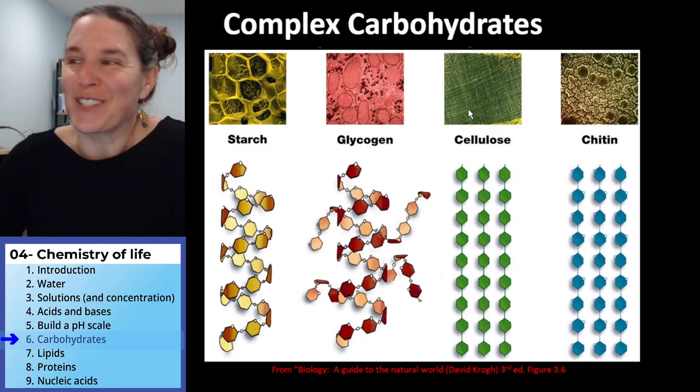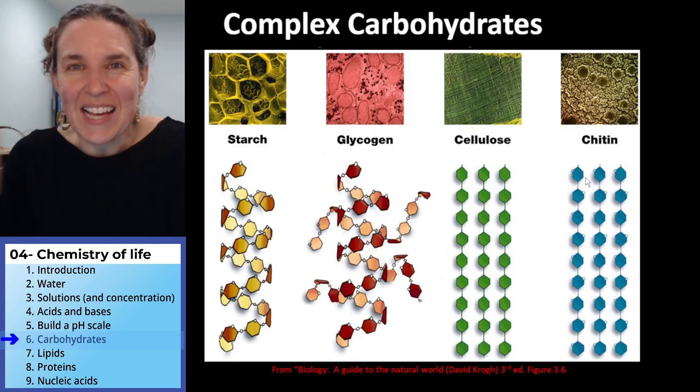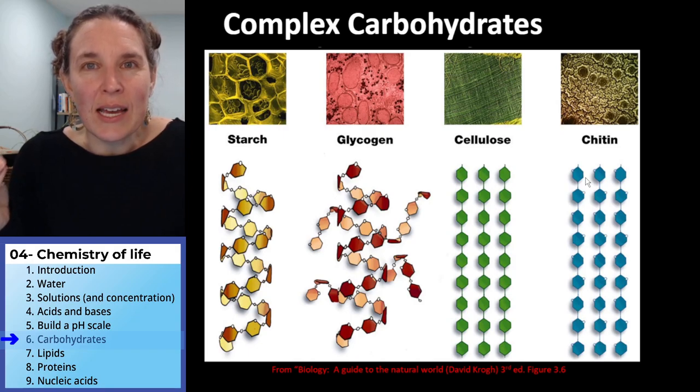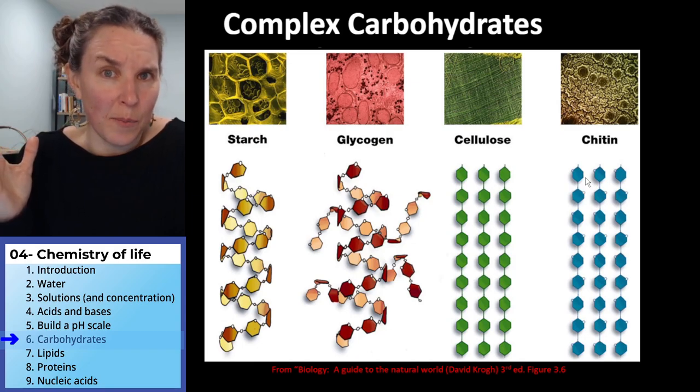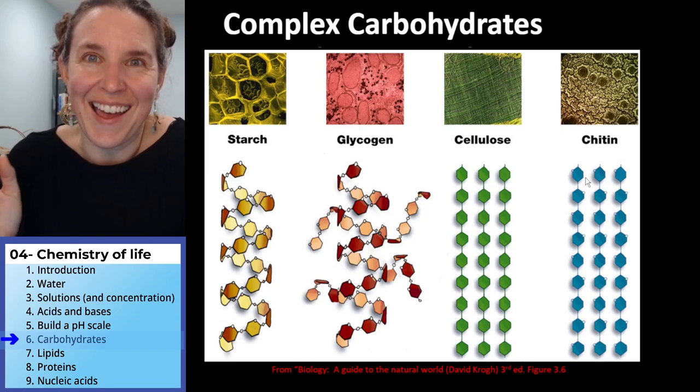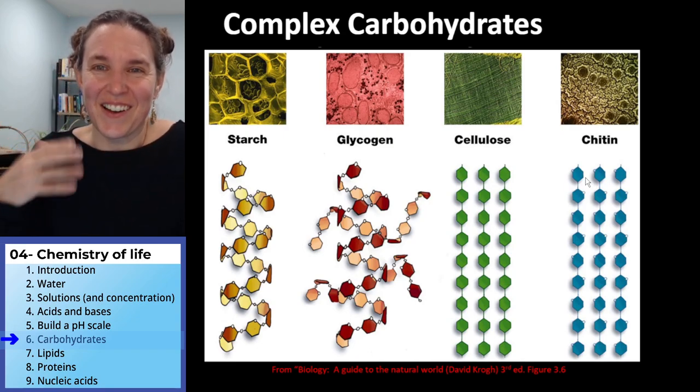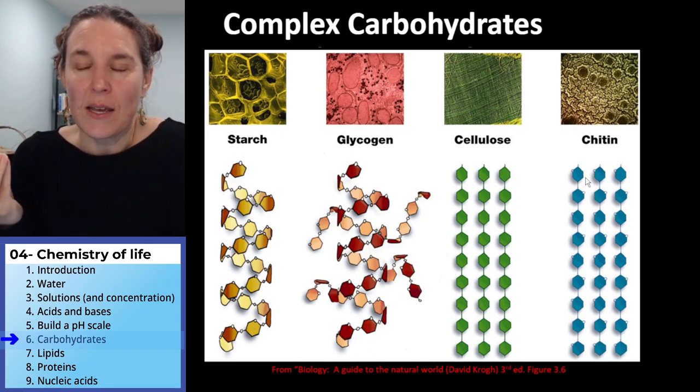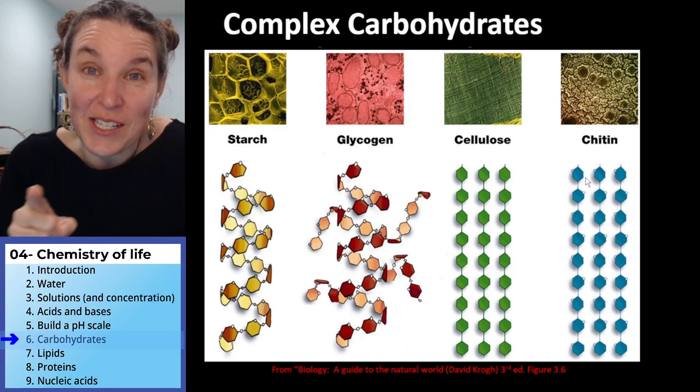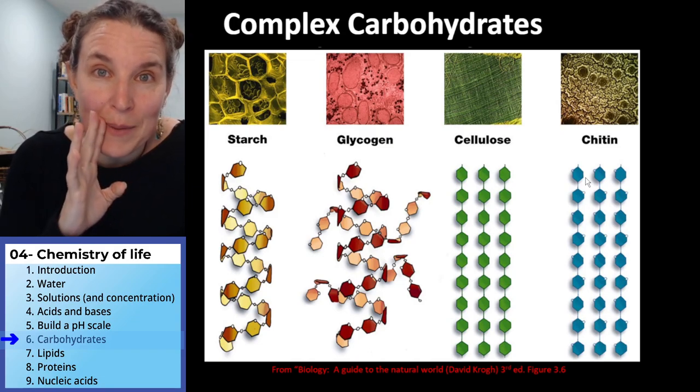We can't digest cellulose, so it makes up dietary fiber for us, but it is made of all these monosaccharides. And then there's this one called chitin. Chitin has just nitrogen atoms added, and it's found in the exoskeletons of crabs and sow bugs and other crustacean type critters with shells. And guess what? This is the crazy part about to blow your mind.